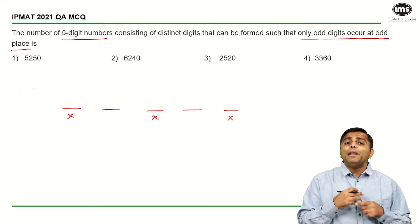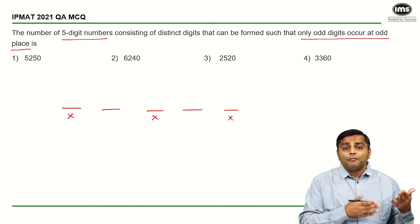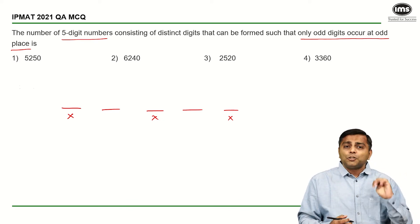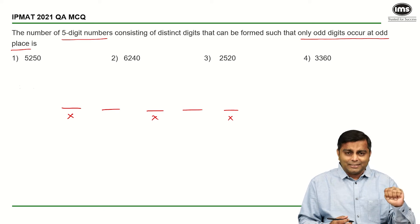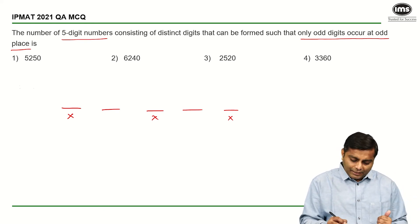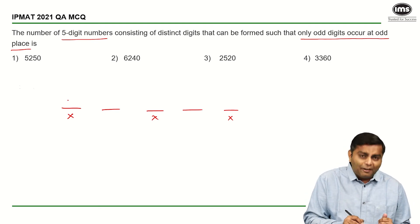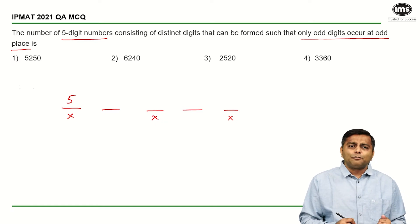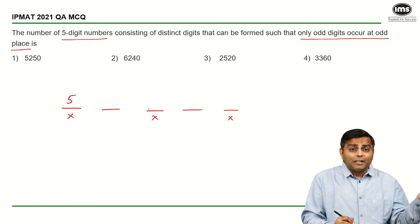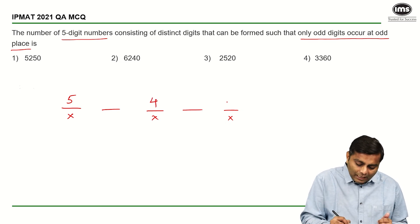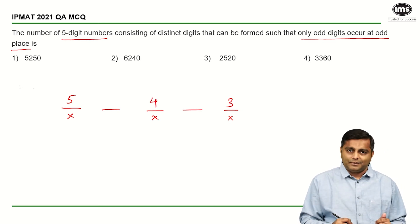Now how many options do we have for odd digits? We have 5 options: 1, 3, 5, 7, and 9. Correct. So out of these 5 digits I can pick up any one digit and put at these places. So for the first place, let's say I have 5 choices, or let's say I write 5C1 or 5. So 5 choices for this place. I've used one number and I cannot repeat. So 4 choices for this place and 3 choices for this place. Correct.